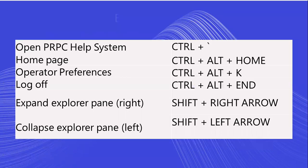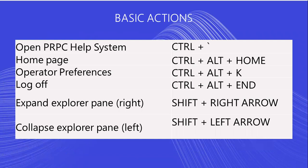For the basic Pega actions and their respective shortcut keys: to open the Pega PRPC help from the application, use Ctrl + single quote. To go to the home page, use Ctrl+Alt+Home. To open operator preferences, use Ctrl+Alt+K. To log off, use Ctrl+Alt+End. To collapse or expand the explorer pane, use Shift+Right Arrow or Shift+Left Arrow.